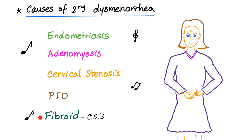"Fibroidosis" refers to fibroids — the "-osis" is added just so it rhymes. And of course, we are not making fun of any patients. It's just a funny way to remember the causes of secondary dysmenorrhea so that we can help patients better.